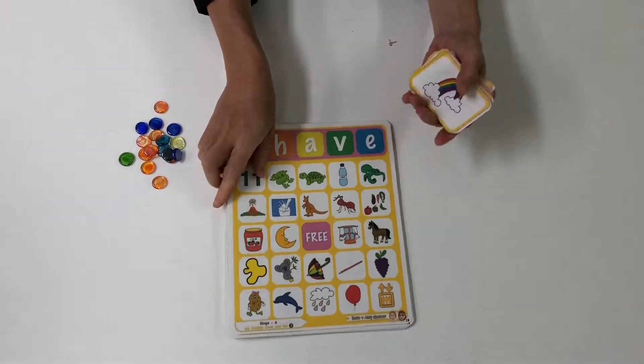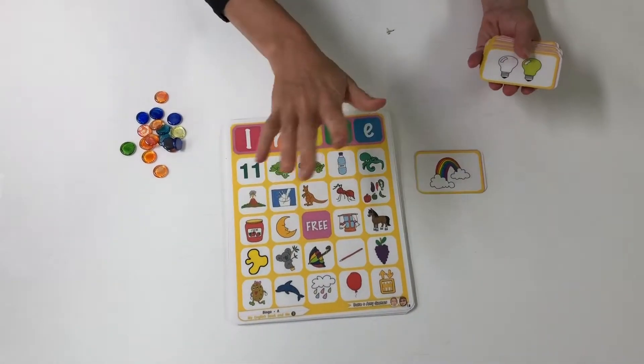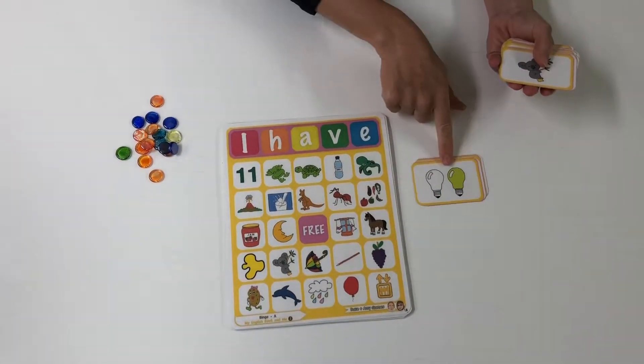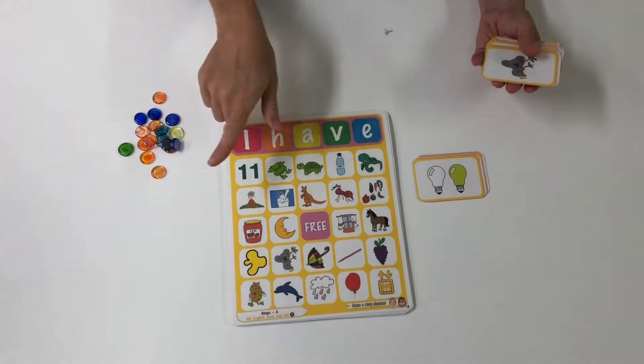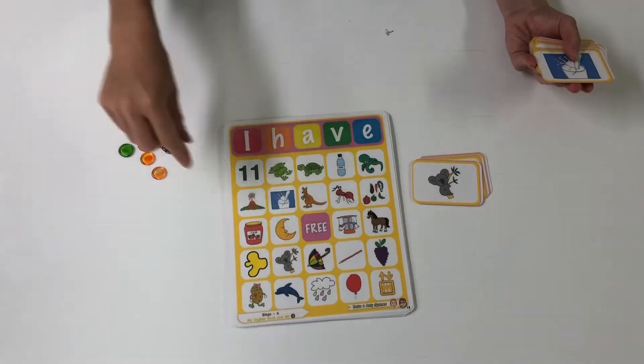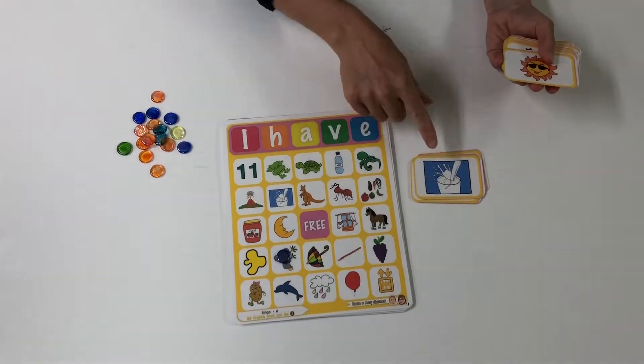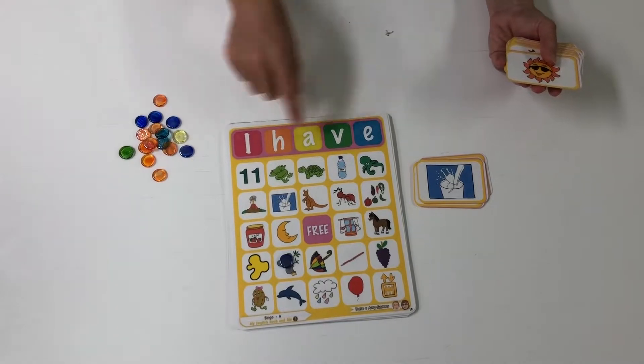Do the picture side. Rainbow - on or off? No, on and off. Koala - I have a koala. Milk - I have milk.